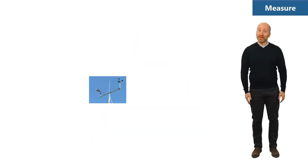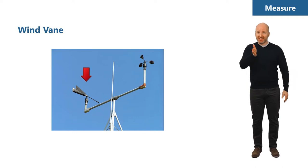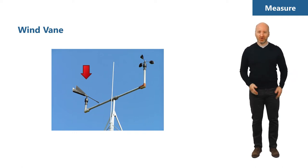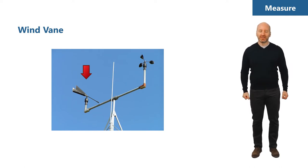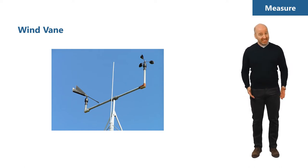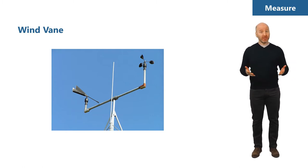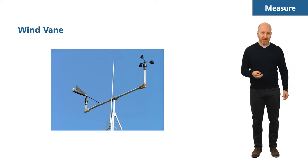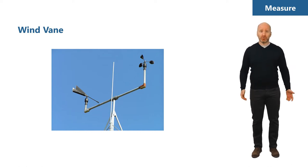This is a wind vane — essentially a fin attached to a vertical shaft which pivots across all 360 degrees of a compass to measure the direction from which the wind is blowing. In addition to the anemometer and wind vane, metmasts usually hold other devices: a thermometer to measure temperature, a barometer to measure air pressure, and sensors for relative humidity.